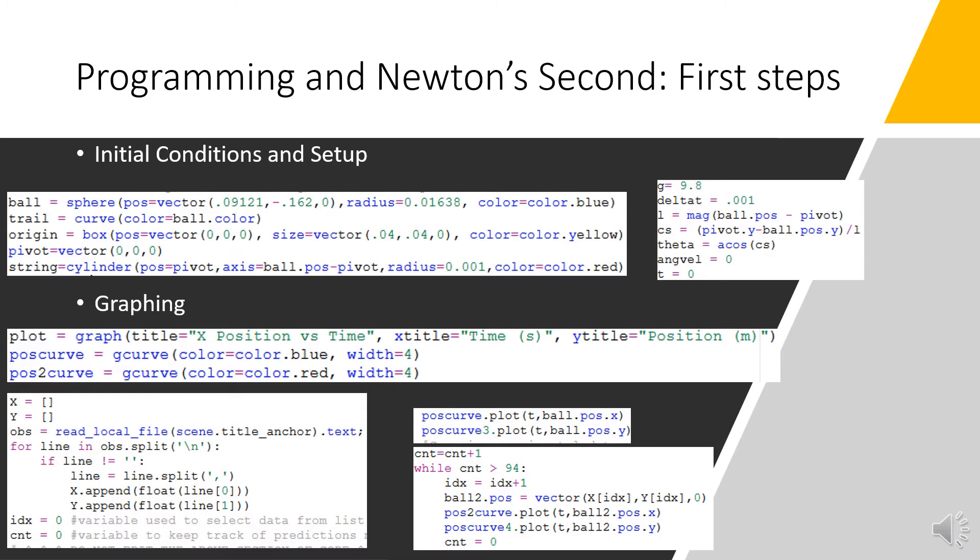Then, I set up the graph for the position and copied in the data from the CSV file. The two pictures in the bottom right are inside the computational loop, which is examined on the next slide.